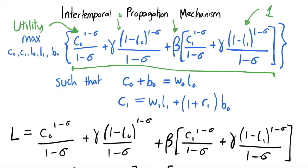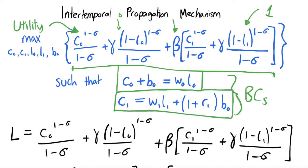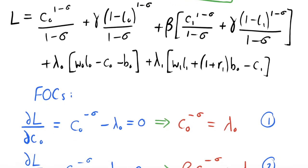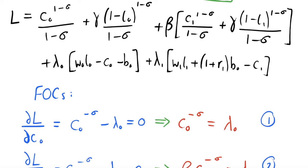We maximize subject to our budget constraints — the period zero budget constraint and the period one budget constraint. These intertemporal budget constraints allow for some borrowing over time with a b0 term, where we can either save or borrow b0 across periods. To solve this problem we set up the Lagrangian: our objective function is our utility, and we maximize subject to two constraints using Lagrange multipliers lambda zero for the period zero budget constraint and lambda one for the period one budget constraint.